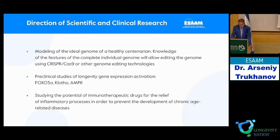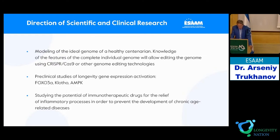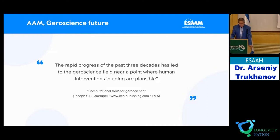What are the directions of future scientific and clinical research? First, modeling of an ideal genome over a healthy centenarian — knowledge of the complete individual genome will allow genome editing using CRISPR technologies. We also saw from Anton Kaluga's presentation how to diagnose the full genome and assess risks. Additionally, preclinical studies of longevity genes expression or activation, studying the potential of immunotherapeutic drugs for relief of inflammatory processes to prevent the development of chronic age-related disease. The rapid progress of the past three decades has led to a point where human interventions in aging are plausible.